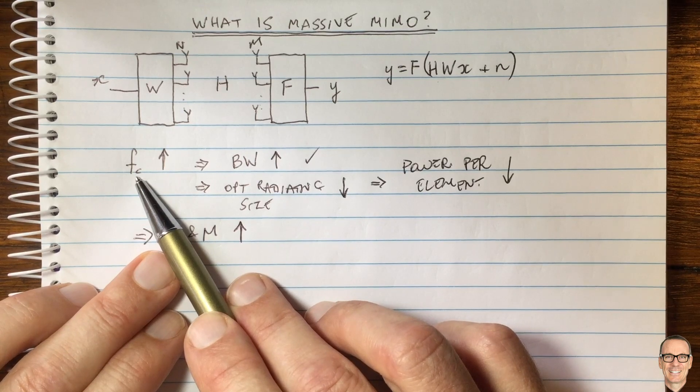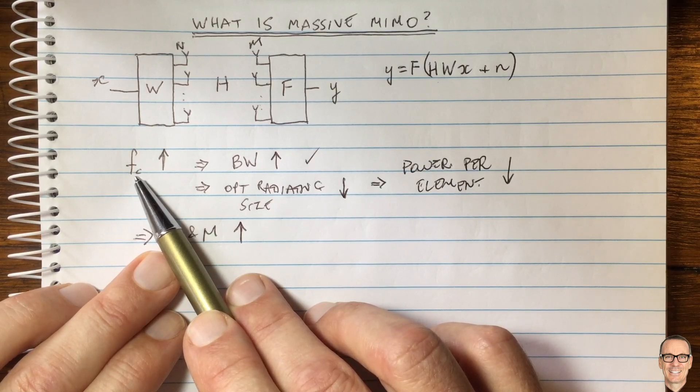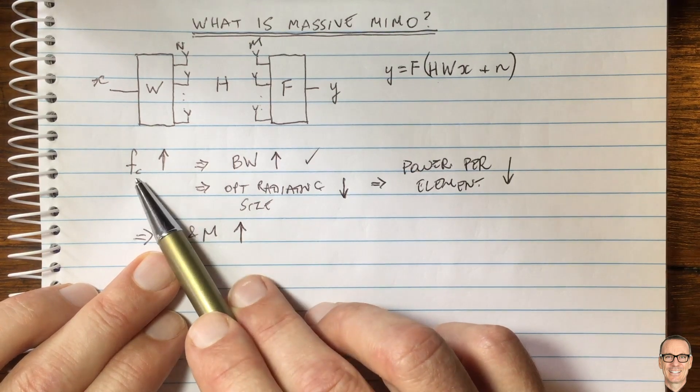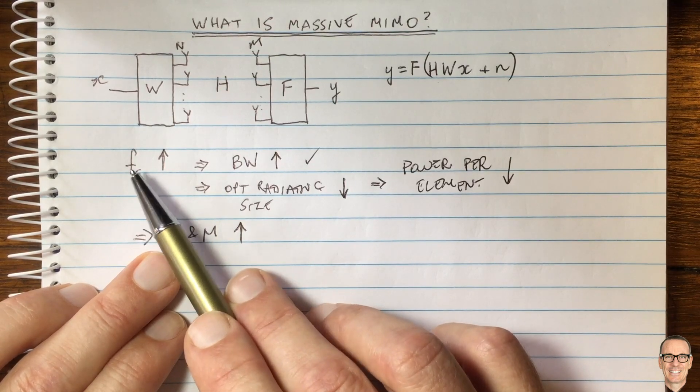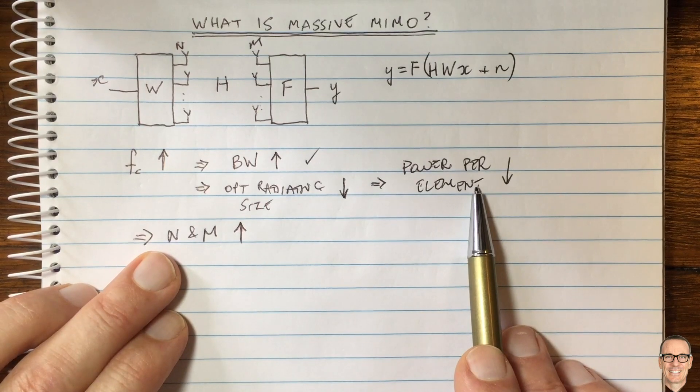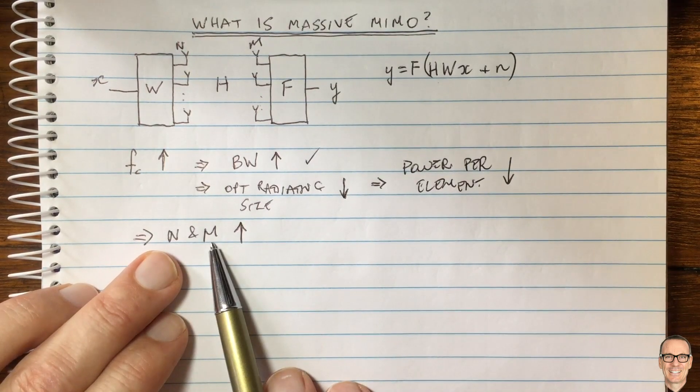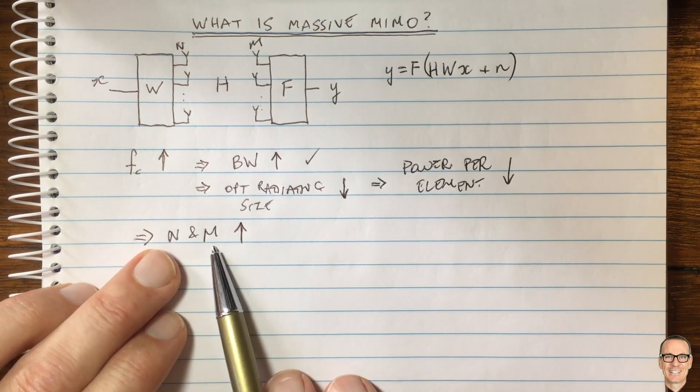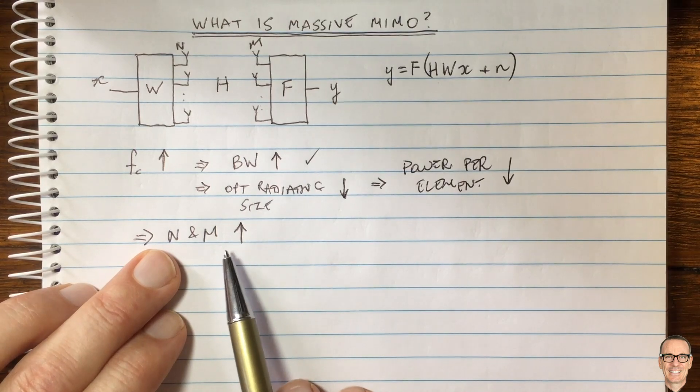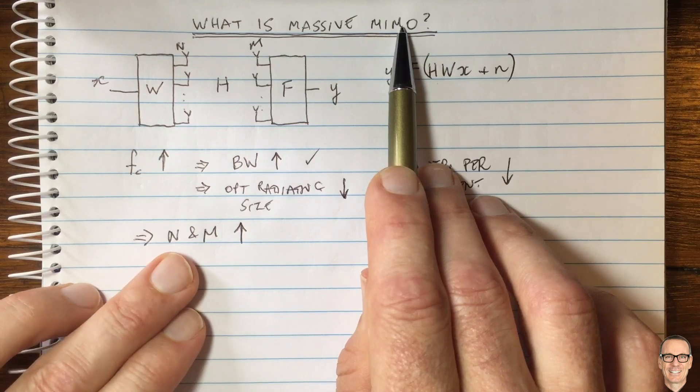As the frequency goes up a lot, current frequencies for mobile communications are around one to two gigahertz. As we move up to six gigahertz to 28 gigahertz, even up to 60 and 70 gigahertz, the elements become small, the power becomes low, and we need a lot of antennas to get enough power over all the antennas to make a communication link over an outdoor distance. This is where we get massive MIMO.